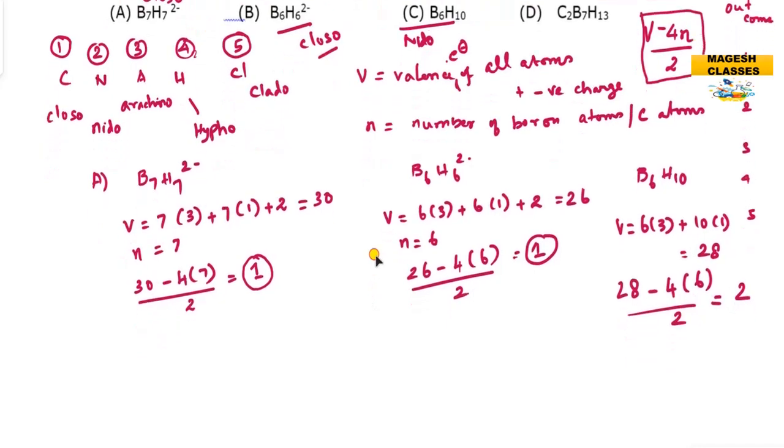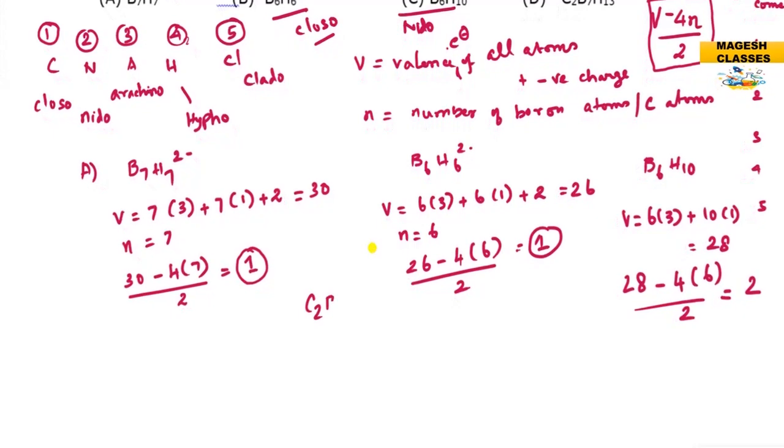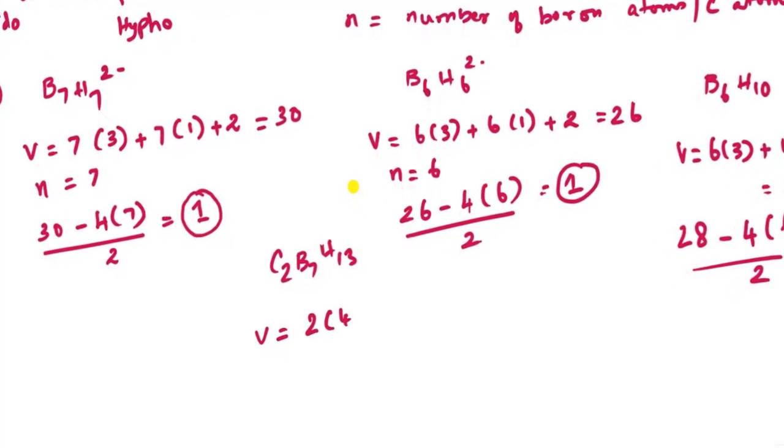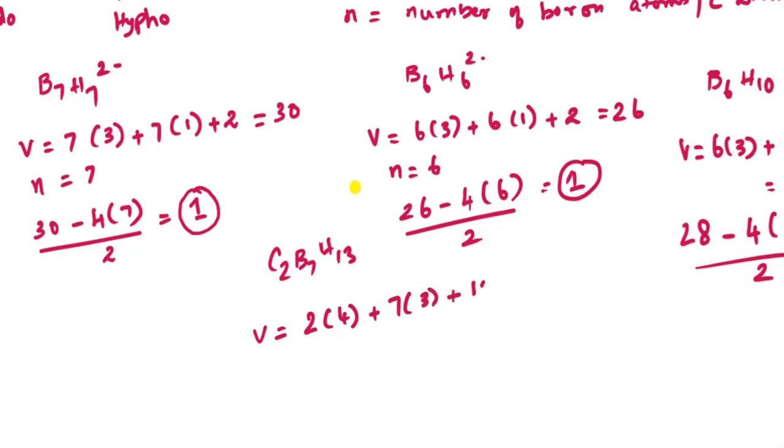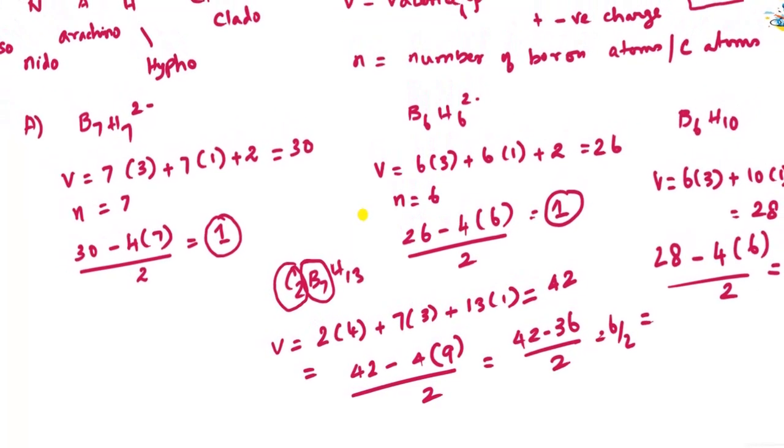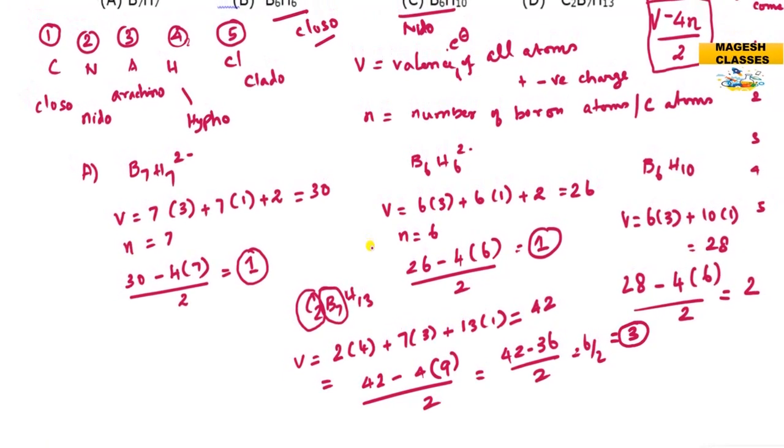Now we check C2B7H13. What is V? Carbon has valence electron 4, so 2 times 4 equals 8. Plus 7 times 3 equals 21, plus 13 times 1 equals 13. Total is 42. Substituting: V minus 4n by 2. V is 42 minus 4 times n. The number of carbon and boron atoms: 2 carbon plus 7 boron equals 9 total. So 42 minus 36, divided by 2, equals 6 divided by 2, equals 3. Output 3. When the output is 3, we have arachno.